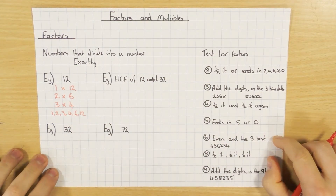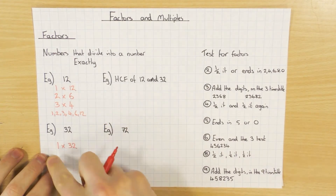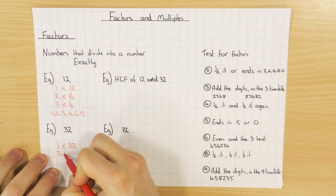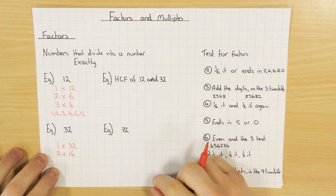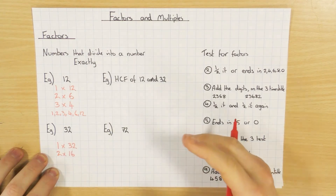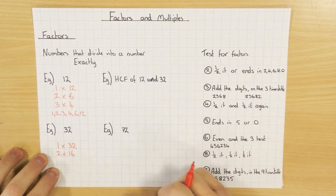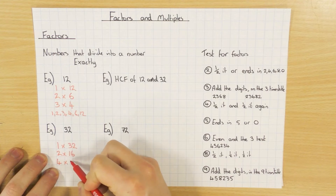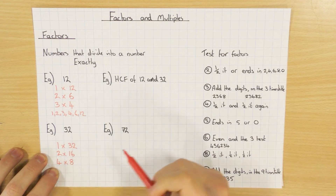Let's have a go at 32 — exactly the same strategy. Start off with your 1 times itself, so 1 times 32. So 1 is a factor and 32 is a factor. Let's test 2: well, 2 times 16. Now 3 — this is interesting. You know your 3 times table: 10 threes are 30, so 11 threes are 33. So 3 doesn't go into it; 3 is not a factor. Next one to test is 4, and using your times tables 4 times 8 is 32. So 4 and 8 are both factors.